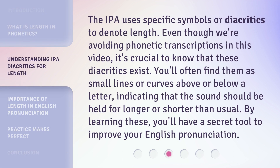The IPA uses specific symbols or diacritics to denote length. Even though we're avoiding phonetic transcriptions in this video, it's crucial to know that these diacritics exist. You'll often find them as small lines or curves above or below a letter, indicating that the sound should be held for longer or shorter than usual. By learning these, you'll have a secret tool to improve your English pronunciation.